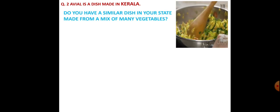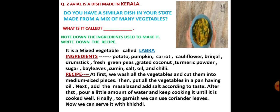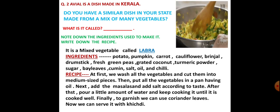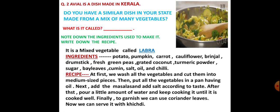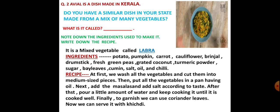Avial is a dish made in Kerala. Do you have a similar dish in your state made from a mix of many vegetables? We are from West Bengal and we also have a mixed vegetable dish called labra. The ingredients are: potato, pumpkin, carrot, cauliflower, brinjal, drumstick, fresh green peas, grated coconut, turmeric powder, sugar, bay leaves, cumin, salt, oil, and chili. The recipe: wash all the vegetables and cut into medium-sized pieces. Put all the vegetables in a pan with oil. Add the masalas and salt to taste. Pour a little water and keep cooking until done. Finally, garnish with coriander leaves and serve with khichdi.